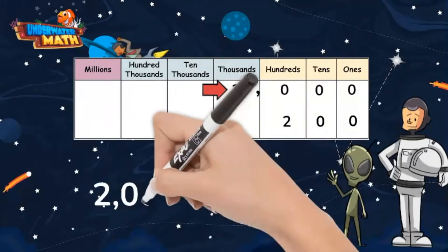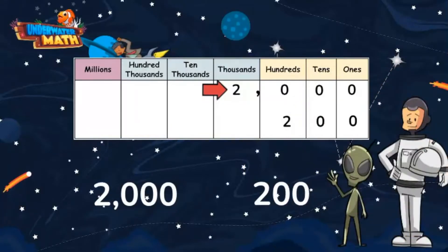If we wanted to compare these two numbers, we would use the greater than symbol in the middle to say 2000 is greater than 200. The comparison symbol always opens up to the larger number.